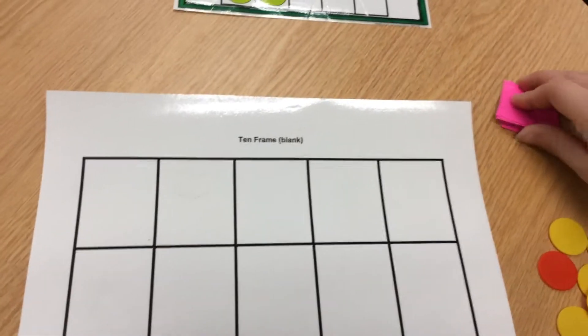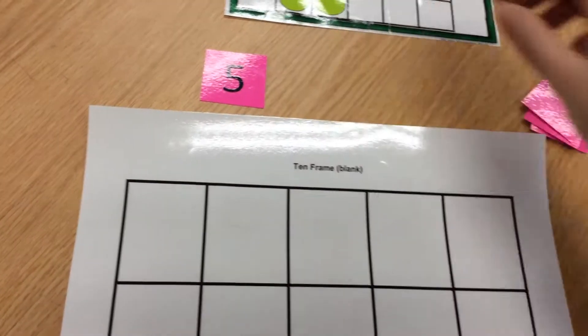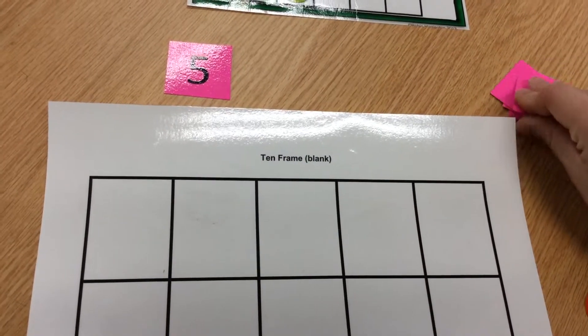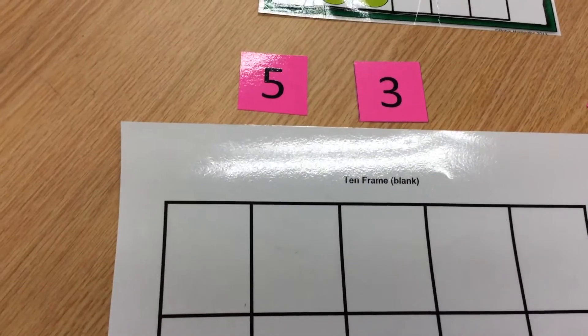To show addition on a ten frame, you simply are going to flip over two numbers. These are the two numbers I'm going to add today.